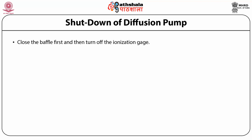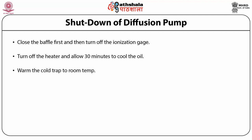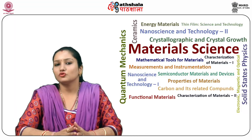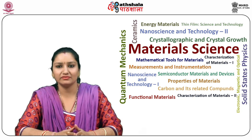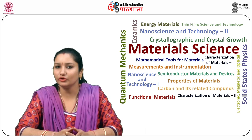Now let's discuss about the shutdown of diffusion pump. First of all close the baffle and then turn off the ionization gauge. Secondly turn off the heater and allow 30 minutes to cool the oil. Next warm the cold trap to room temperature. Then close the foreline valve and lastly vent the diffusion pump via the vent valve.